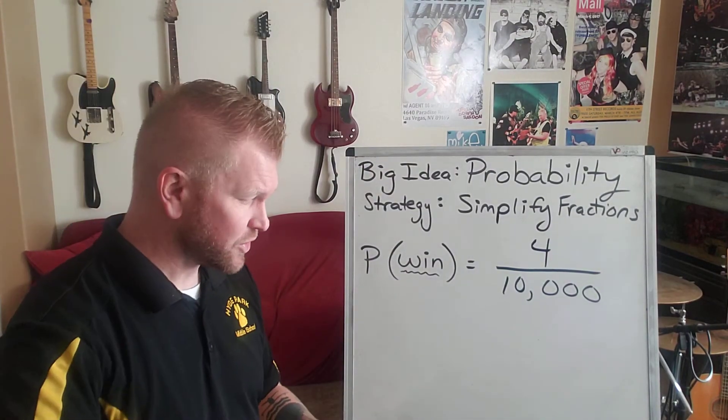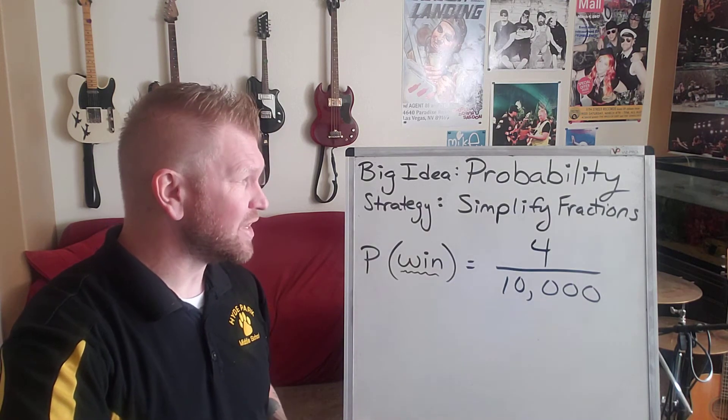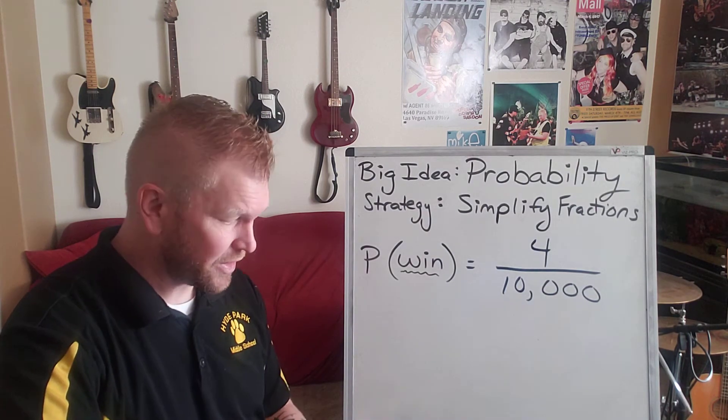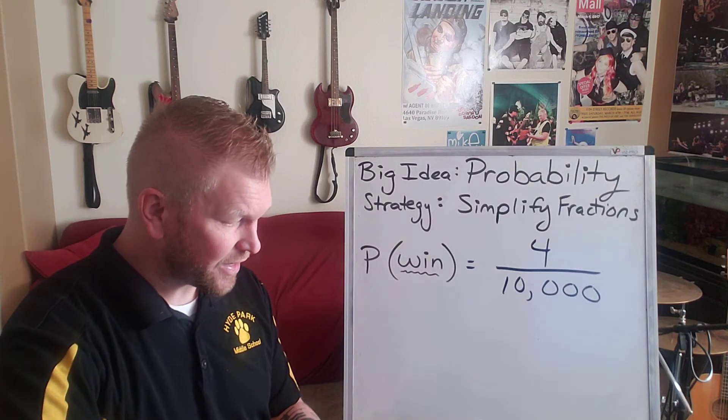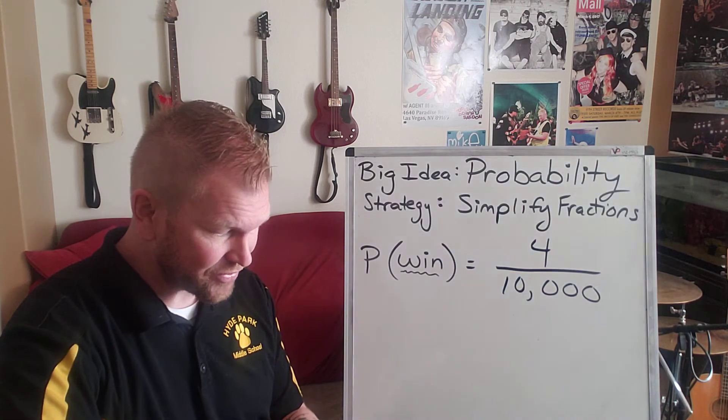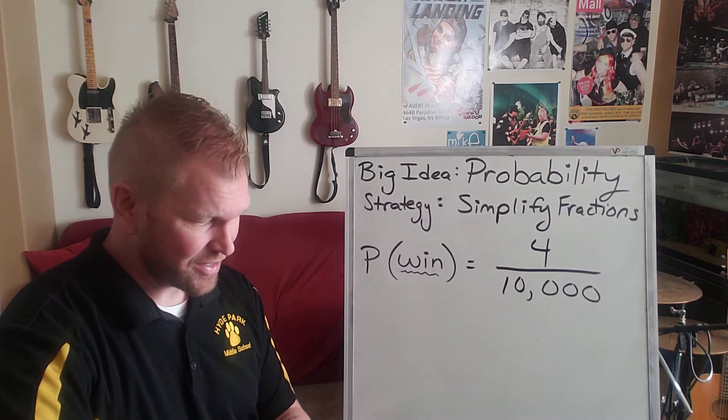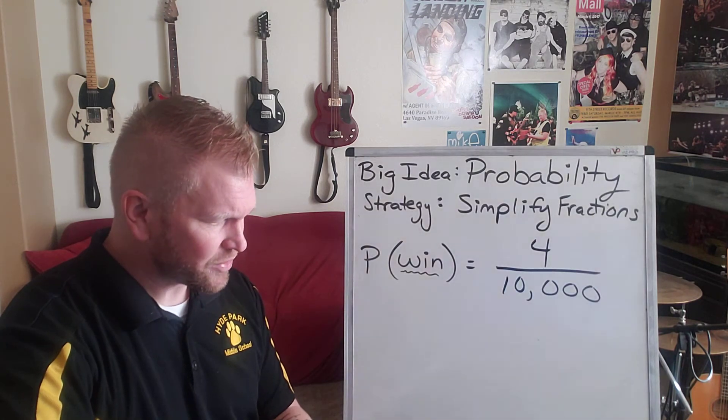Now, if you look at the multiple choice answers, one of them says one out of 10,000, but again, this family has more than just one chance to win out of 10,000. One of them has 2,500 out of 10,000, but they don't have that many tickets in there for the family. Then there's two other answers.